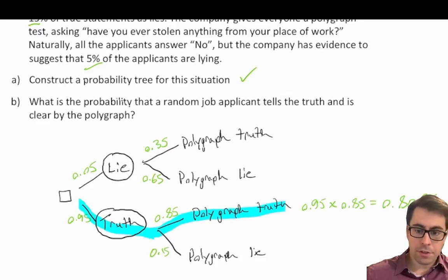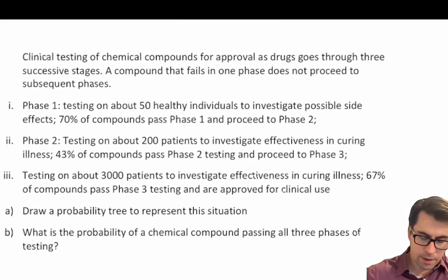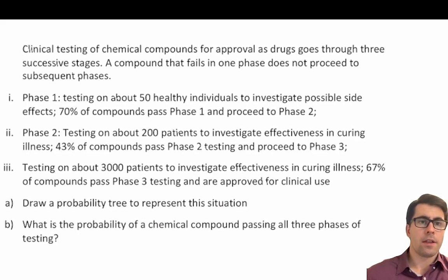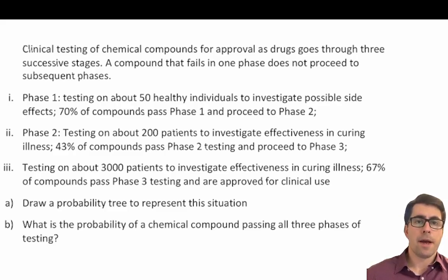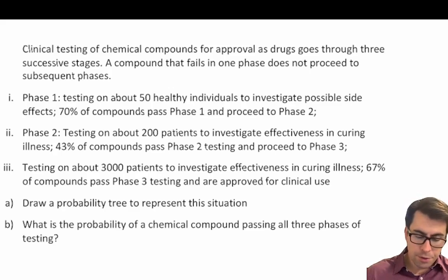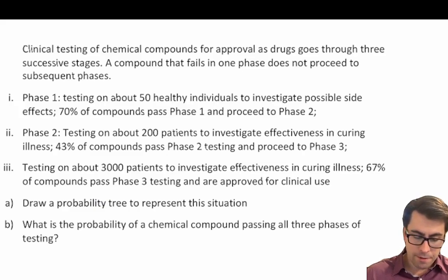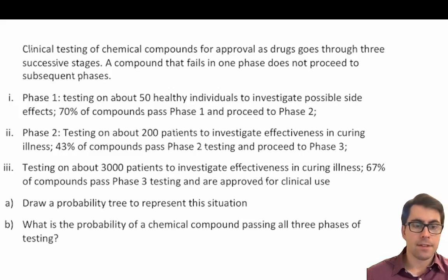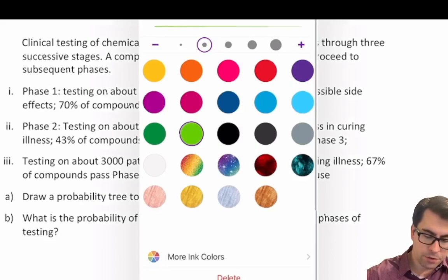Okay, so that's easy enough. Let's jump into our next worked example. A clinical testing of chemical compounds for approval as drugs goes through three successive stages. A compound that fails in one phase does not proceed to subsequent phases. In phase one they test on 50 healthy adults to investigate possible side effects — 70% of compounds pass phase one. In phase two, 43% of compounds pass. And in phase three, 67% of compounds pass.